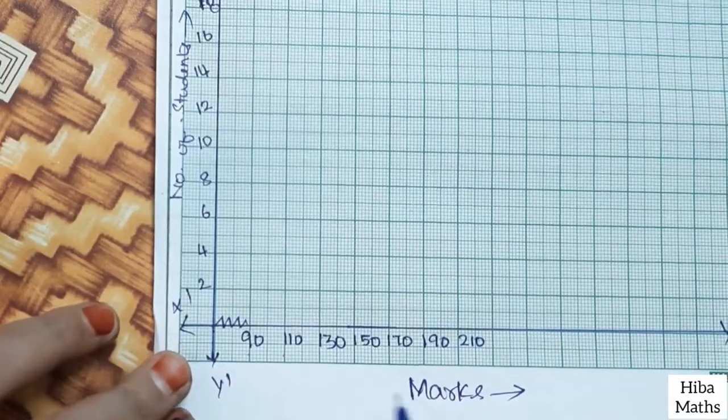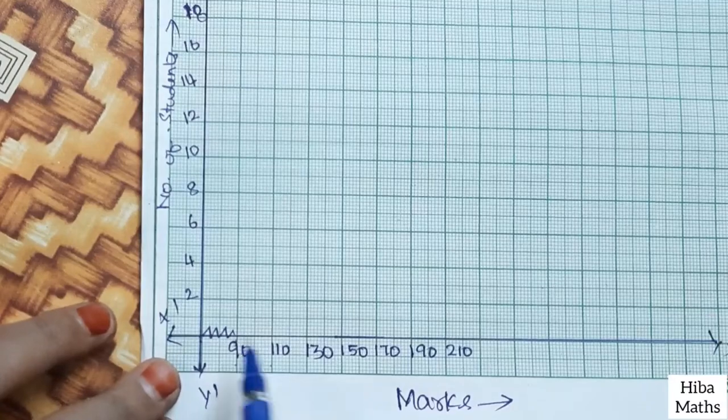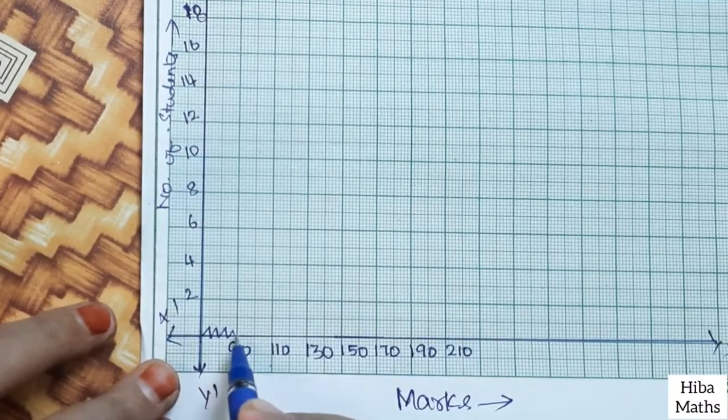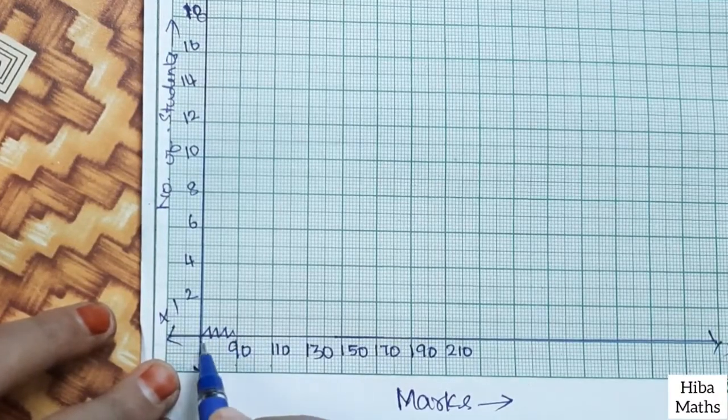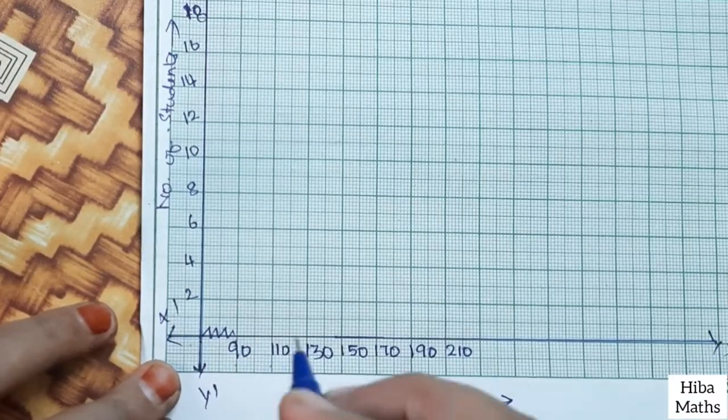Here you can see the marks on X-axis. Y-axis will show number of students. So if you are looking at 90, then you can give it zigzag. Directly, we have to go to the wrong line.